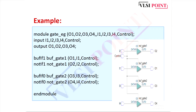The code is very simple. First the gate name bufif1, then buff_gate_1 as the instance name - you can give any name - then the output and input ports. Similarly for notif1, notif0, and bufif0, you can write the Verilog code. I hope the two categories - bufif/notif and basic gates - are now clear to you. If you have any doubt, you can ask.